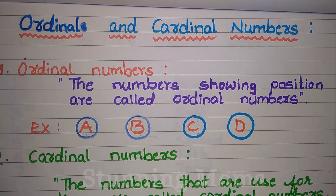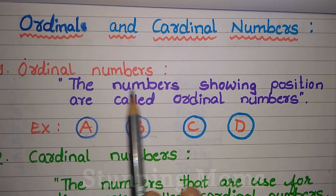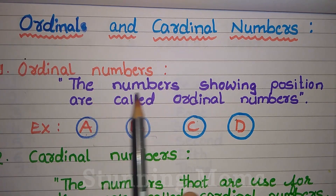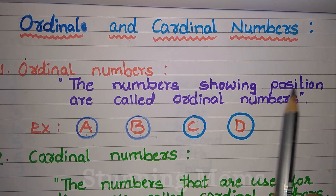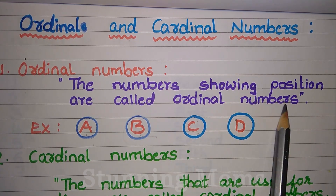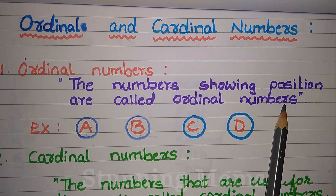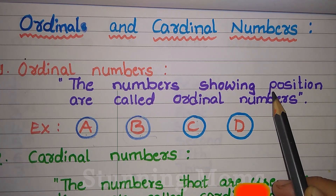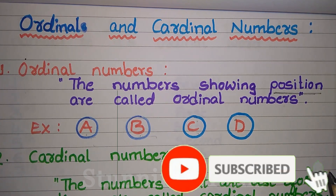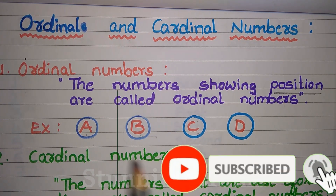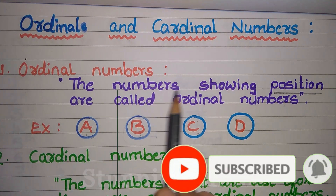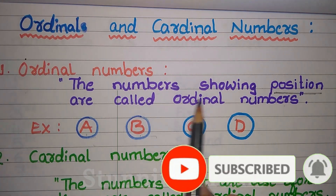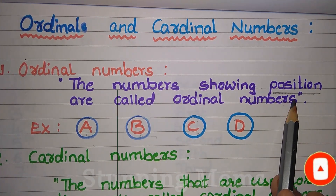Friends, ordinal numbers. Ordinal numbers are the numbers showing position. They are called ordinal numbers. It simply tells only about the position. The numbers showing position are called ordinal numbers.